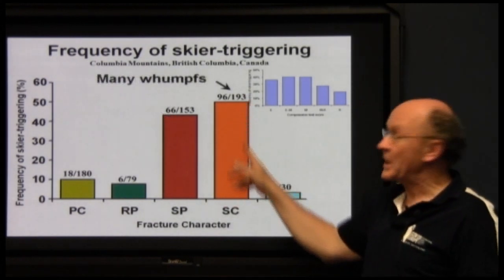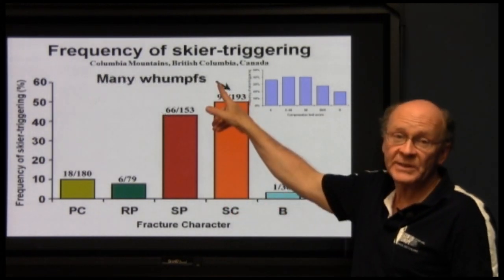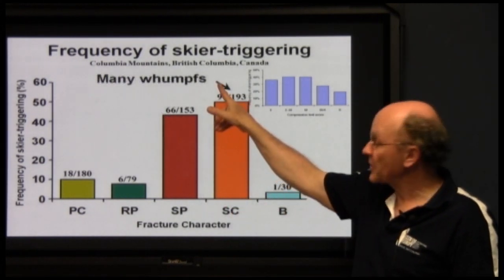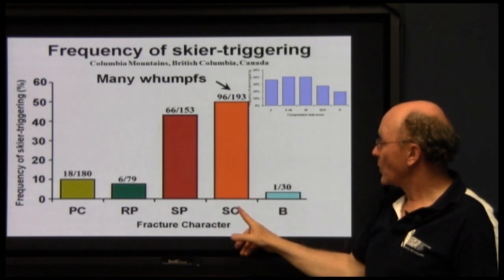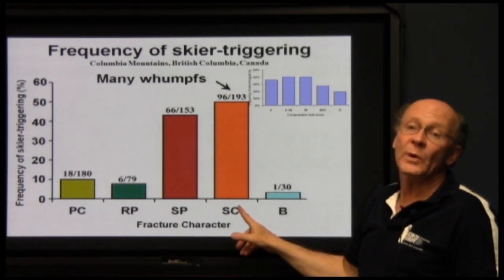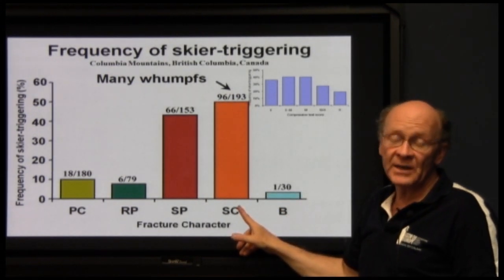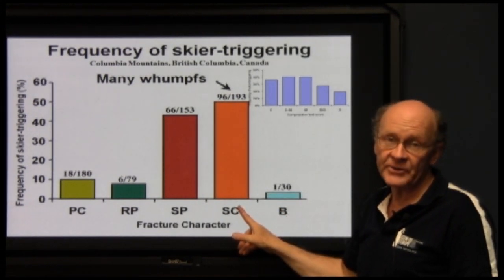The other interesting finding is that most whumps, which happen on fairly gentle terrain, were most common when we had sudden collapse, or SC, fractures.